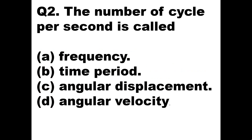Question 2: The number of cycles per second is called — ? If you see an AC quantity, it has a positive half cycle and a negative half cycle — that together is one cycle.